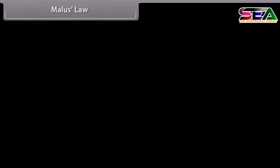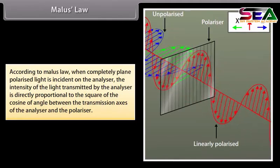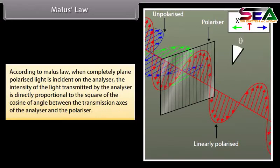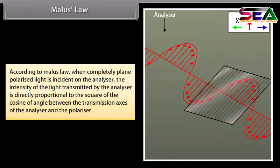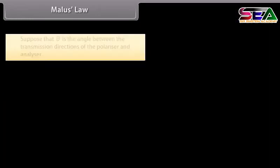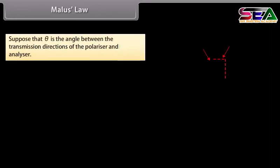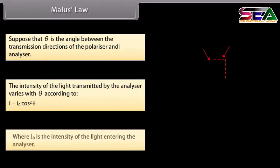Malus's law. According to Malus law, when completely plane polarized light is incident on the analyzer, the intensity of the light transmitted by the analyzer is directly proportional to the square of the cosine of angle between the transmission axes of the analyzer and the polarizer. Suppose that theta is the angle between the transmission directions of the polarizer and analyzer, then I equals I naught cos square theta, where I naught is the intensity of the light entering the analyzer.